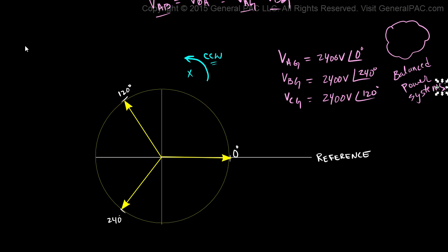I'm going to call this phasor Vag because that's how I defined it. Vag is at 0 degrees and the 0 degrees is my reference line. Vbg is this phasor here and Vcg is this phasor here. Again, if you're having a hard time understanding this setup, just click on this link and go to that balanced power system video tutorial. This right here is an ABC phase rotation.